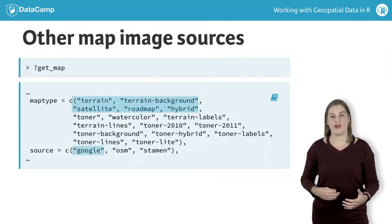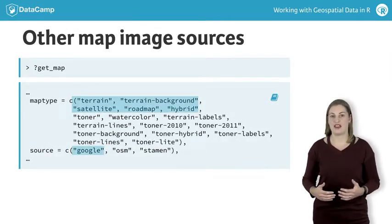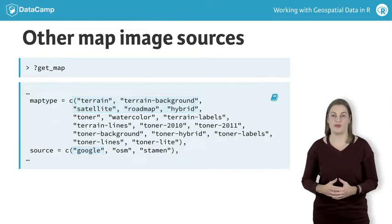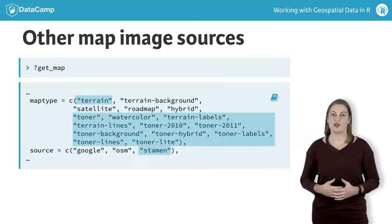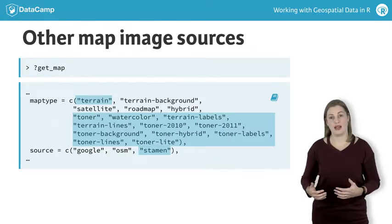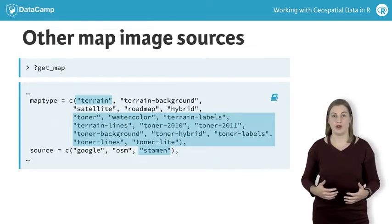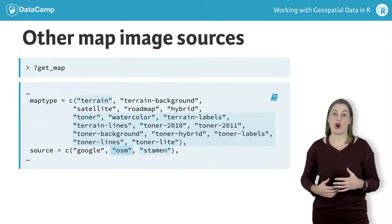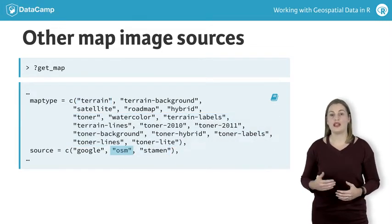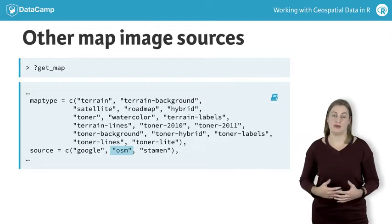The terrain, terrain background, satellite, road map, and hybrid map types come from Google. StamenMaps also has a terrain type in addition to watercolour, terrain labels, toner, and toner variations. The source OSM refers to Open Street Maps and only has one map type, so it doesn't need to be specified.